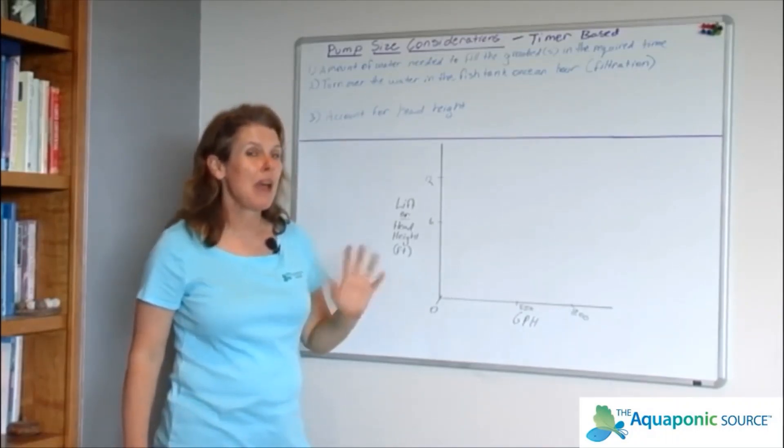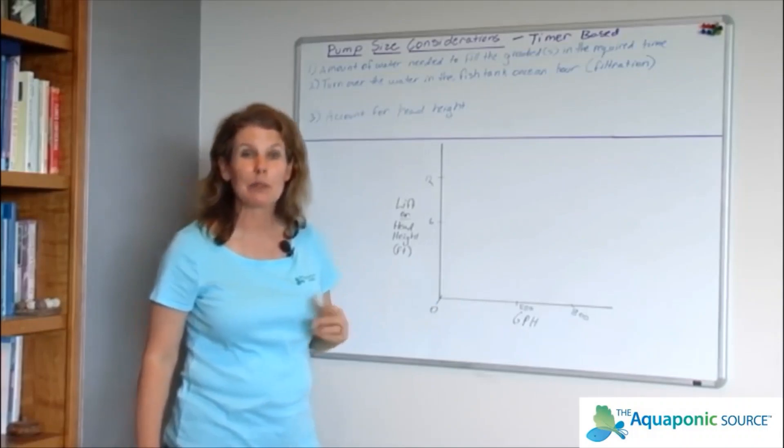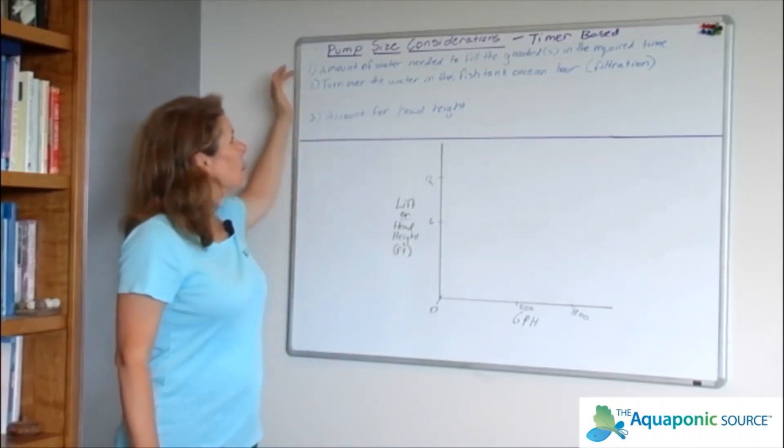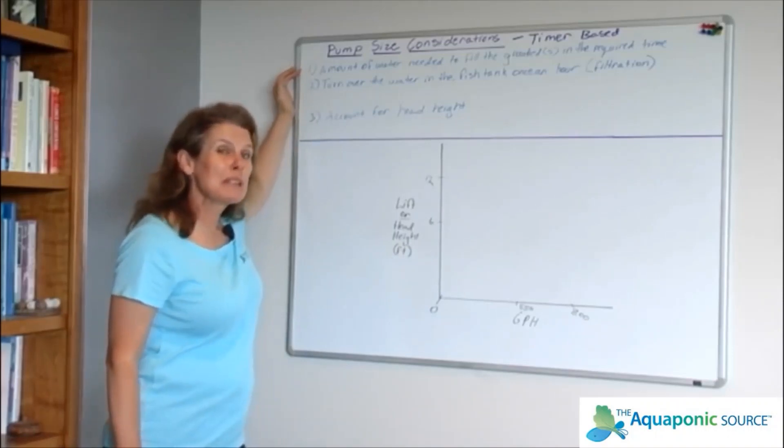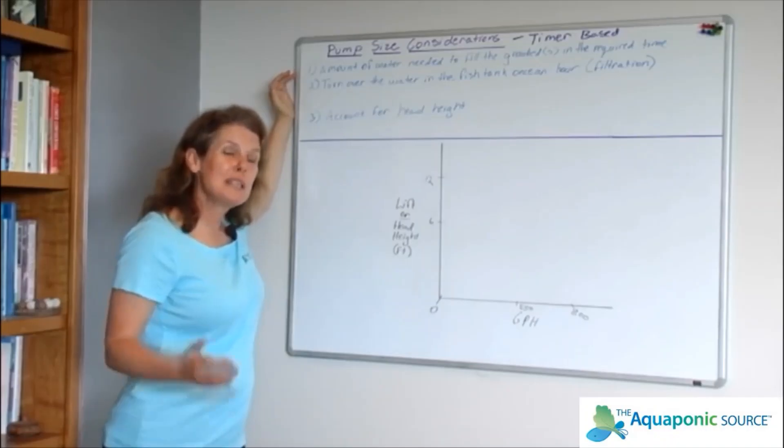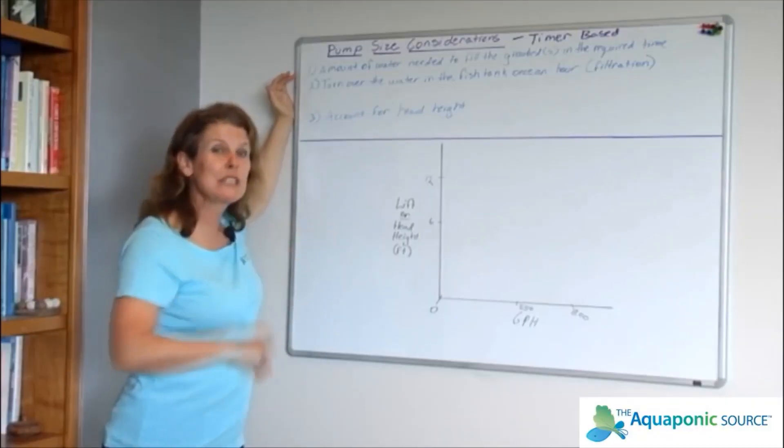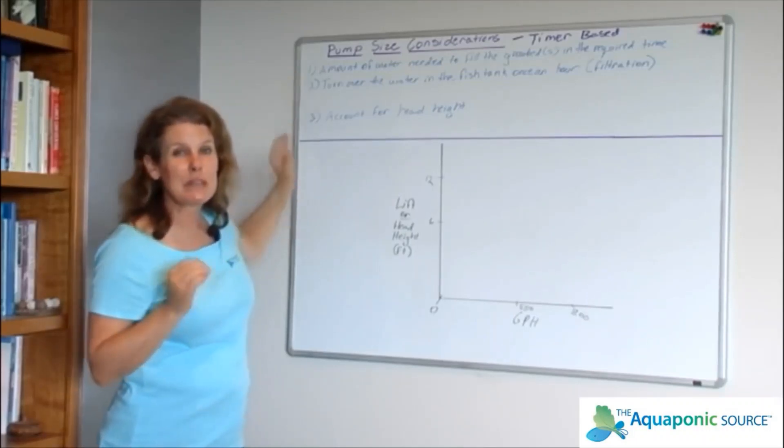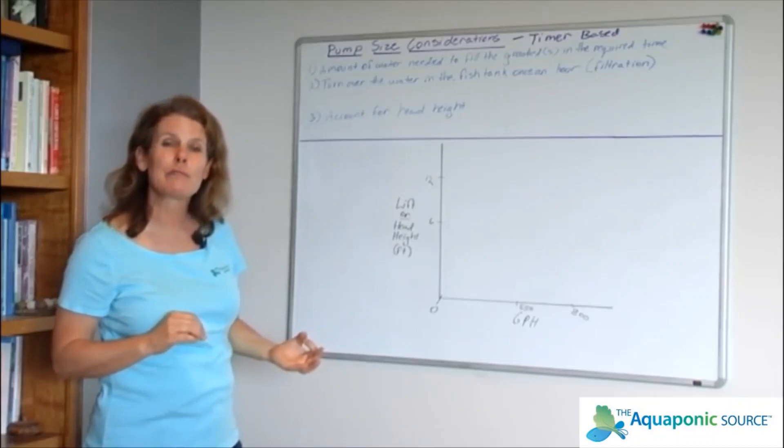We're going to start with the timer based system and then go into an example on a siphon based system. The first thing I want you to think about in a timer based system is that your pump needs to move enough water volume into your grow bed to fill that grow bed to the standpipe in the amount of time that it's running. Generally with timer systems we're running them for 15 minutes on, 45 off, so I have 15 minutes to fill that grow bed right up to the standpipe. That's consideration number one.